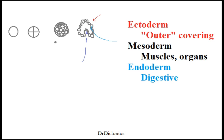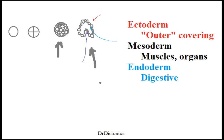This ball here is called the blastula. This ball here is called the gastrula. And then the third one will be the morula. The easy way to remember that is the alphabet: B comes before G, which comes before M — so blastula, gastrula, morula.